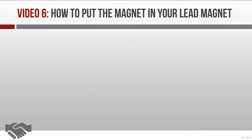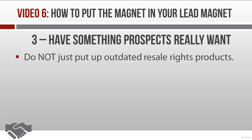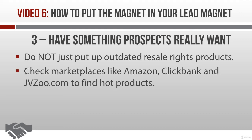The third tip for attracting prospects is to be sure you have something they really want. Pretty simple, but a lot of people overlook this one too. You can't just toss up some resale rights products that your prospects have already seen on a million other websites — it won't work. Do your market research to find out what people really want. Check out marketplaces like Amazon, Clickbank, and JVZoo to find out what products are hot and selling like crazy.